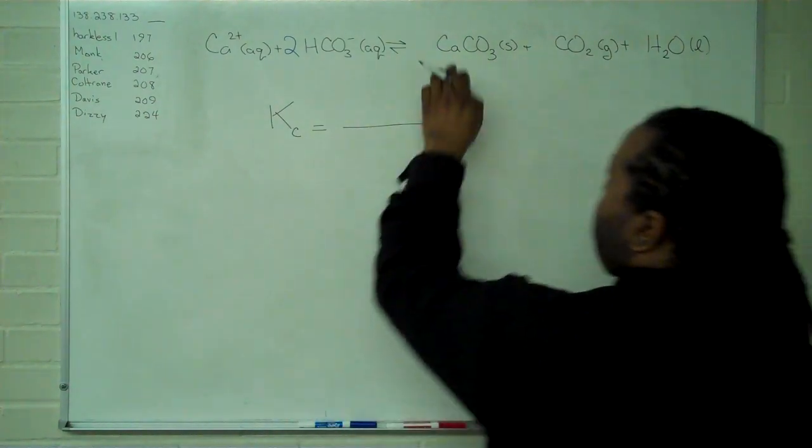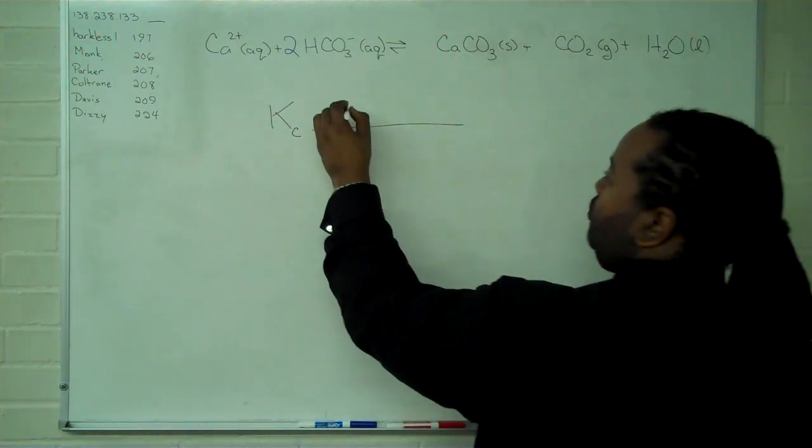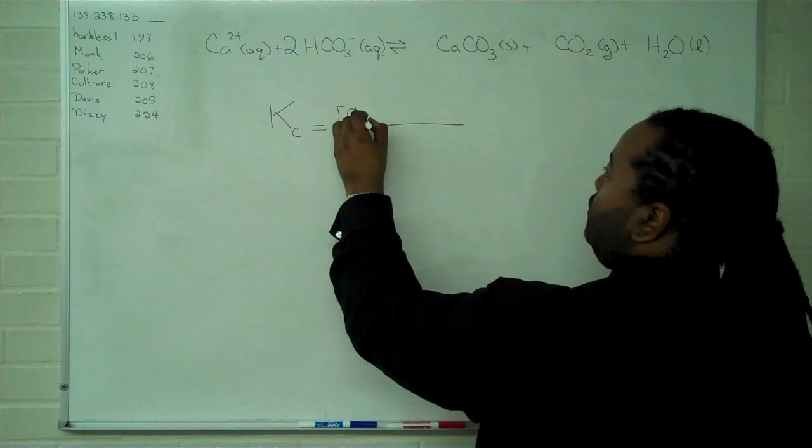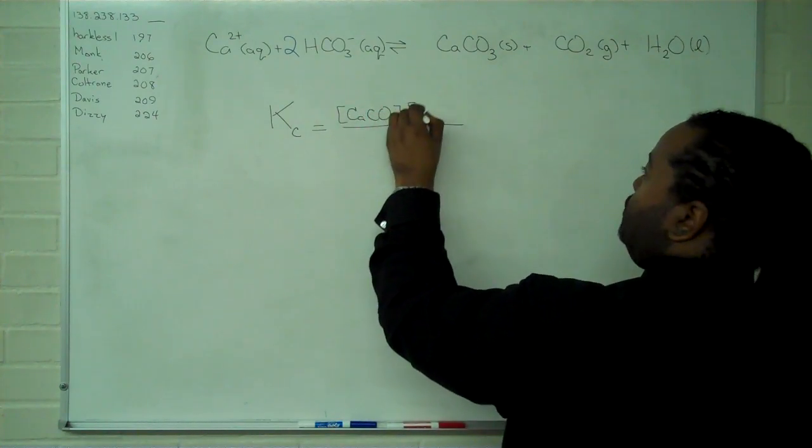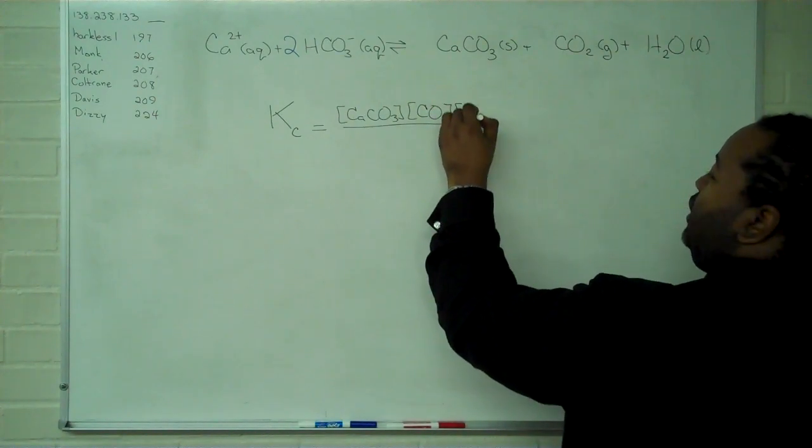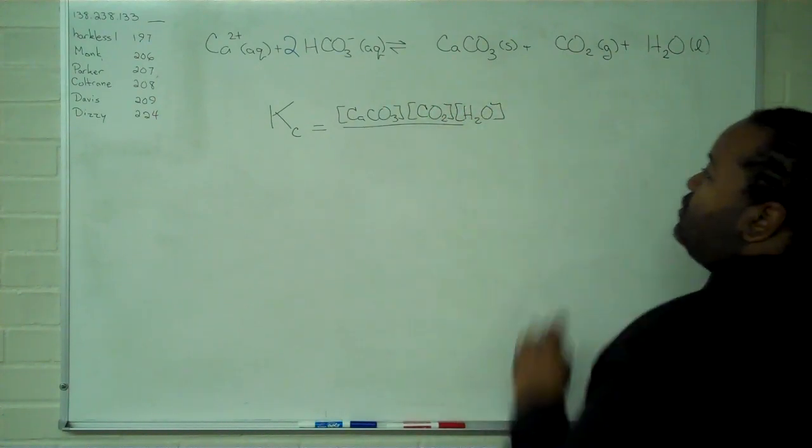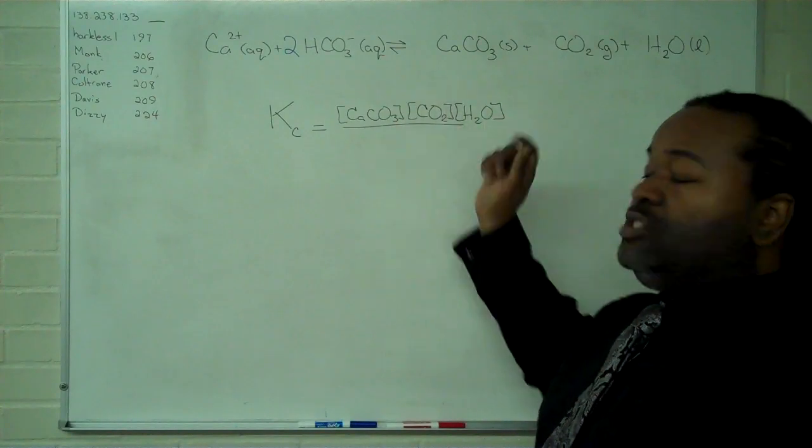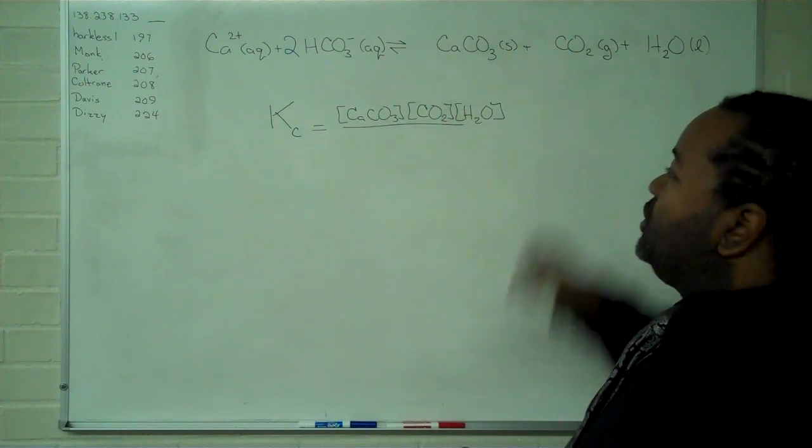So we want the concentrations of our products up top, making sure to use the exponents derived from their stoichiometric coefficients. In this case, everything is raised to the first power because their coefficients are all 1.